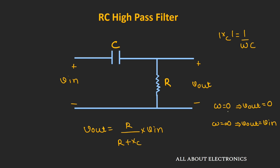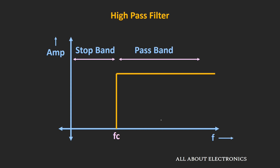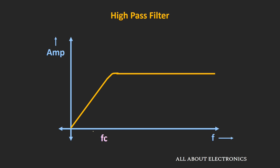At low frequency, the output will be approximately equal to 0, and as the frequency increases, the output will also increase. At high frequencies, the output will be approximately equal to the input value. If we see the frequency response of the actual high pass filter, at low frequencies the output is near 0, and as frequency increases, the output increases. At cutoff frequency, the output will be 0.707 (or 1/√2) times the input value, and beyond the cutoff frequency, the output approximately equals the input.